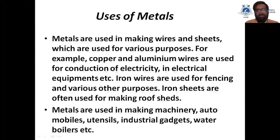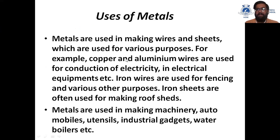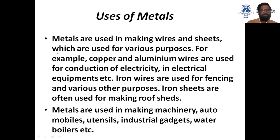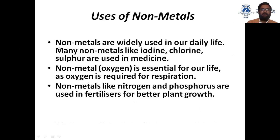Now we will study some uses of metals. Metals are used in making wires and sheets for various purposes. Copper and aluminium wires are used for conduction of electricity in electrical equipment. Iron wires are used for fencing and various other purposes. Iron sheets are often used for making roof sheets. Metals are also used in making machinery, automobiles, utensils, industrial gadgets, and water boilers.